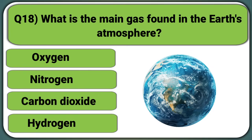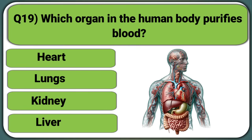What is the main gas found in the earth's atmosphere? Oxygen, Nitrogen, Carbon dioxide, or Hydrogen. Answer: Nitrogen.